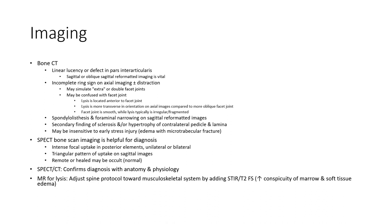Bone scan imaging is helpful for diagnosis, showing focal uptake in the posterior element, unilateral or bilateral, with a triangular pattern of uptake on sagittal images. SPECT CT confirms diagnosis with anatomical and physiological correlation. MRI with an adjacent spine protocol toward the musculoskeletal system, adding T2 fat-saturated sequences, shows increased signal in marrow and soft tissue edema.